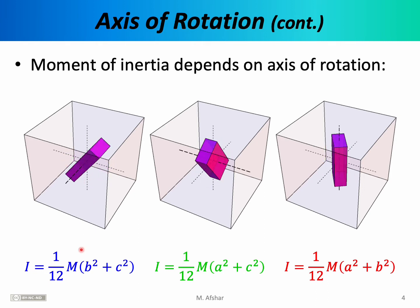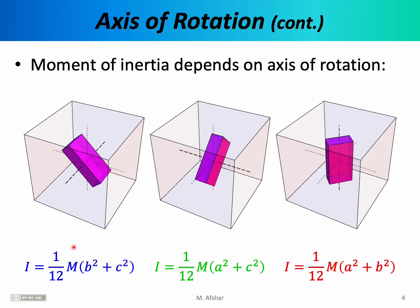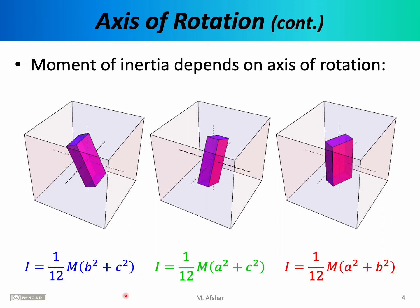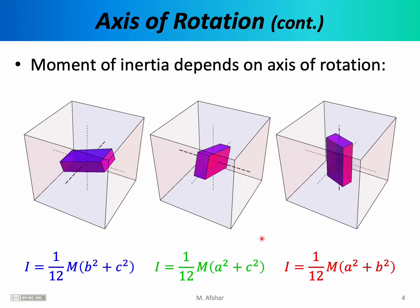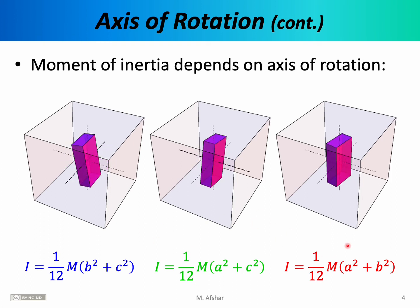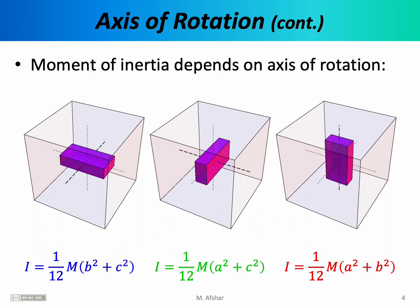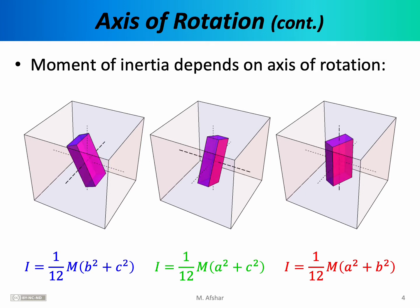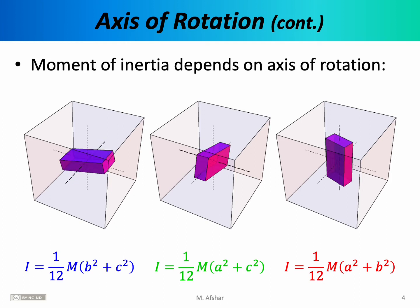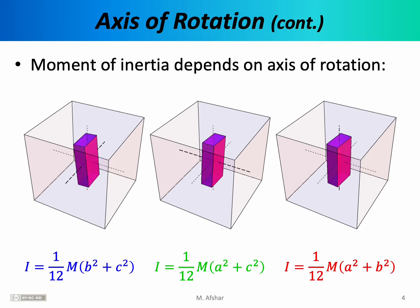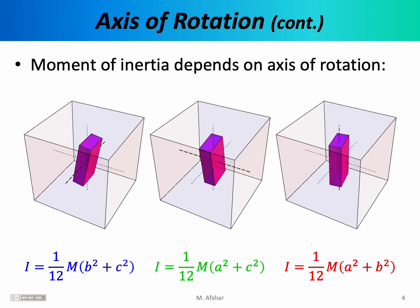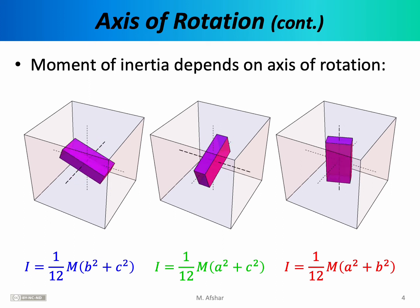Although it's exactly the same object in all three cases, the moment of inertia is going to be different for each case. The formula is the same — it's 1/12 times mass times some dimensions squared — but numerically the moments of inertia will be different because in each formula we're using a different length, width, or height. So it's important to realize that the moment of inertia of an object is a property of the object and the particular axis of rotation that you have chosen.